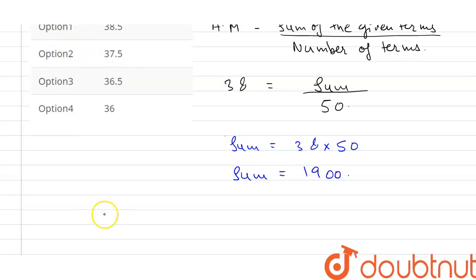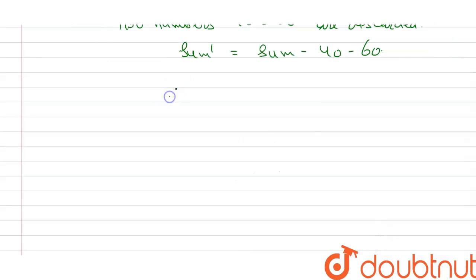Now it is given that two numbers, 40 and 60, are discarded. So the value of sum can be written as sum minus 40 and 60. We can say the value of new sum, which is sum dash, is equal to 1900 minus 100, which is equal to 1800. And the number of terms are 50 minus 2, which is equal to 48.